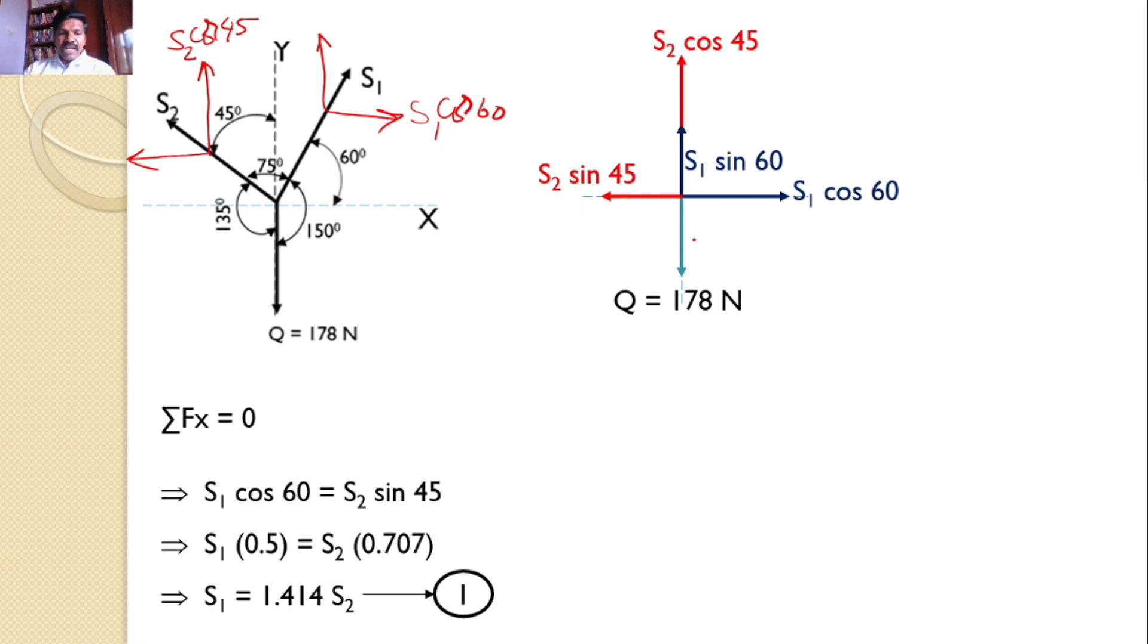Now take sigma Fy equals zero. There are three forces acting along Y axis. I will consider the upward direction as positive. Hence, S1 sin 60 plus S2 cos 45 equals the downward direction force, that is 178 Newtons.